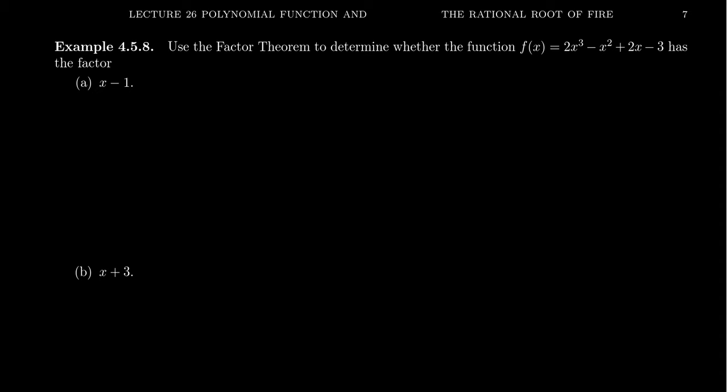Let's use the factor theorem to determine whether f of x has the following factors. So if we take f of x equals 2x cubed minus x squared plus 2x minus 3, what are some of the factors? Let's first consider x minus 1. If you want to consider whether x minus 1 is a factor or not, my idea is to actually do division. We're going to do synthetic division. So we're going to write down the coefficients of the polynomial in descending order. We take 2, negative 1, 2, and negative 3. And if we're dividing by x minus 1, we're just going to record the number 1 right here.